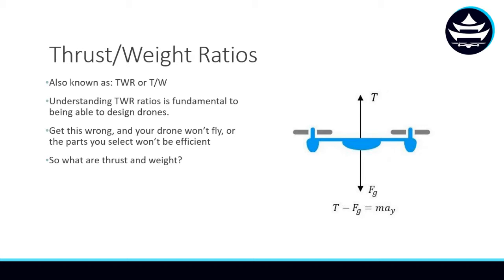So, thrust-to-weight ratios. First off, these can also be called TWR, or T divided by W for shorthand. Understanding TWRs is very fundamental to being able to design drones. Let's dive into what exactly thrust and weight are.